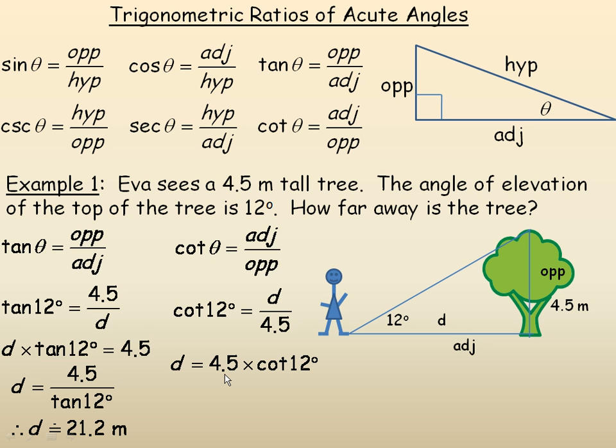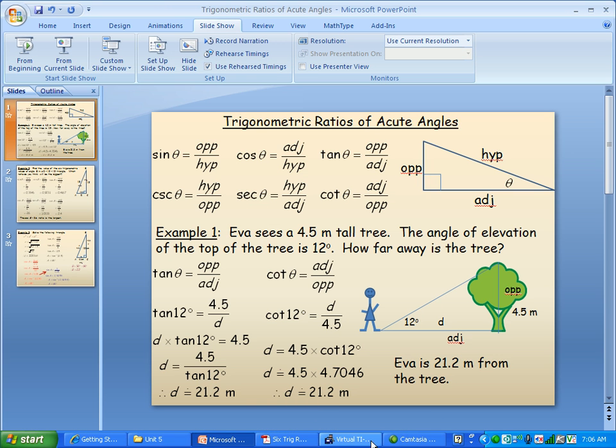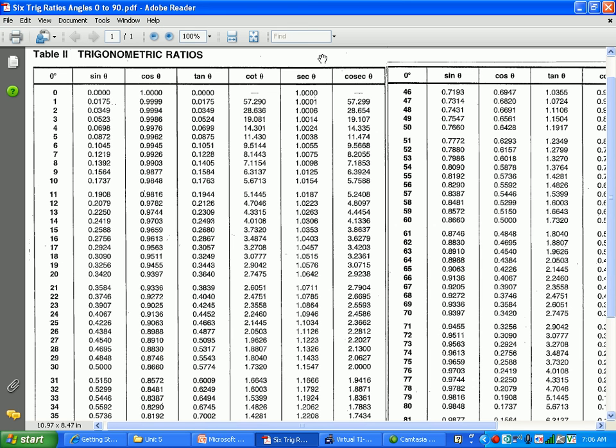All we have to do is find the cotan of 12 and multiply it by 4.5, as opposed to taking 4.5 and dividing by the tan of 12. Before people had scientific calculators, this is a more difficult calculation because you're dividing by a decimal. It's easier to multiply a number by a decimal than it is to divide by a decimal. If you take a look at a trig table that involves all the trig ratios, the cotan of 12 degrees is 4.7046.